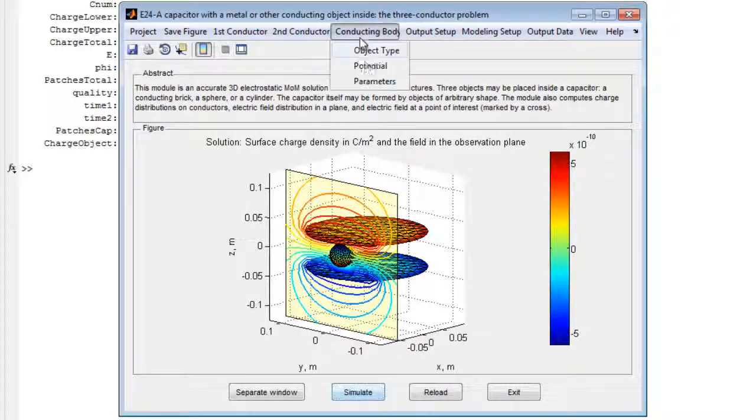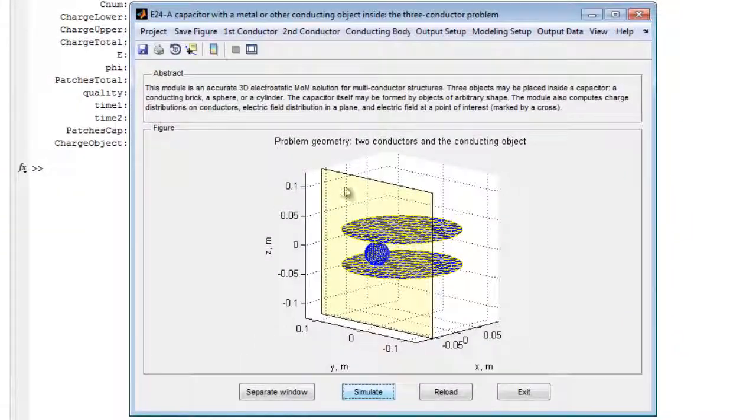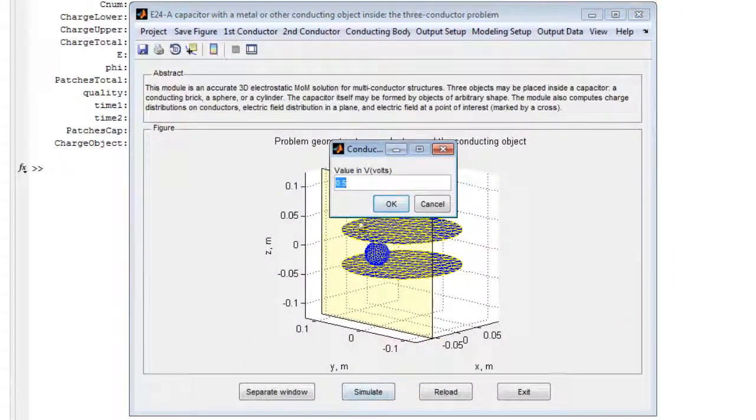Simply change the property and click update, and the simulation runs displaying the surface charge on the object. Here you see that the electric potential and charge distribution for an uncharged object within a capacitor.